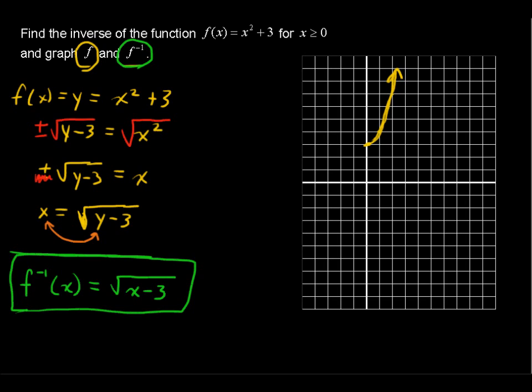...the graph of the inverse is actually going to be a reflection about this line, about this diagonal line. Always. So if a function has an inverse, its graph will be a reflection about that line. And we can say the line y equals x. That's what this purple line is. So a reflection of this.